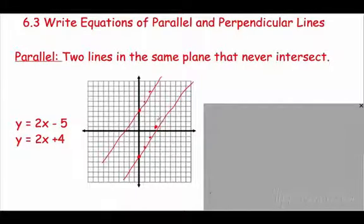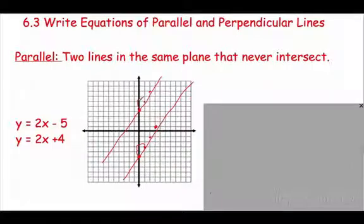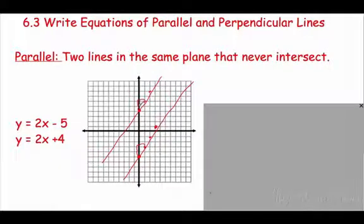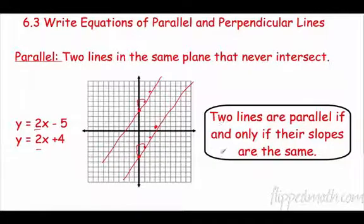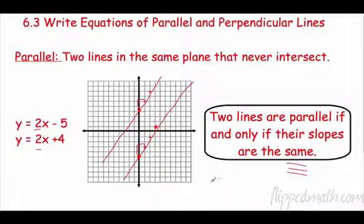If you take a look at these two lines, they are never going to intersect. Why? Because every time I moved, I went up 2 over 1 — the same rate of change on both lines. My rate of change is 2, and that will always cause them to never intersect. Here's the key point: two lines are parallel if and only if their slopes are the same.